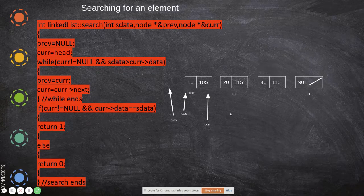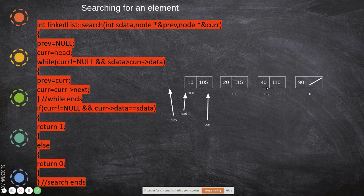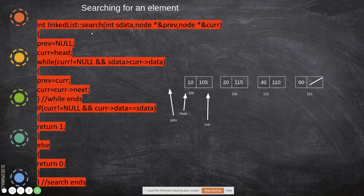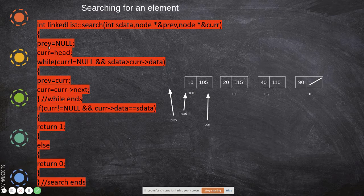Now we look at searching for an element. We are seeing this first because during insertion as well as deletion we need to search. During insertion, we use the search to know whether the data is already present — if it is, there is no need to insert. During deletion, we search for the element we want to delete, say the node with data 40, and it returns the pointer to that node so it can be deleted. We need search for updation as well. The search function takes three arguments: the data to be searched, and two pointer arguments returning the previous pointer and the current pointer.